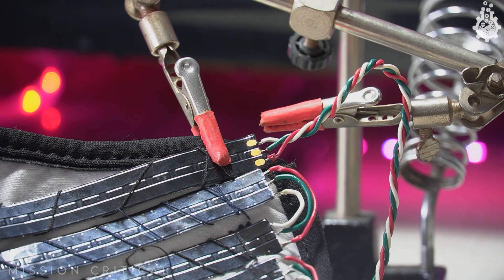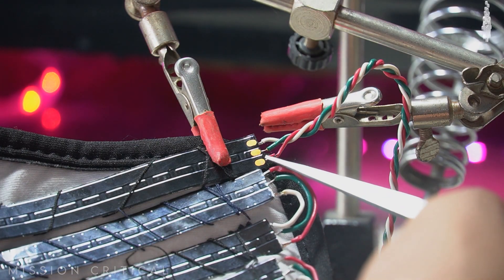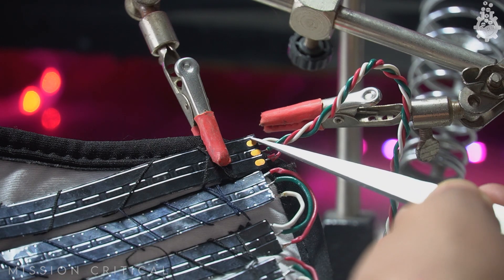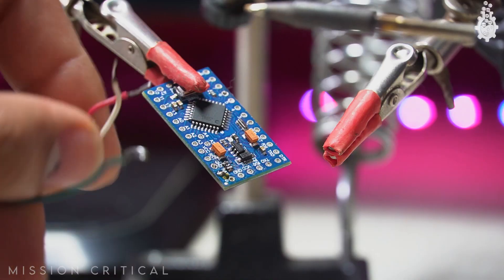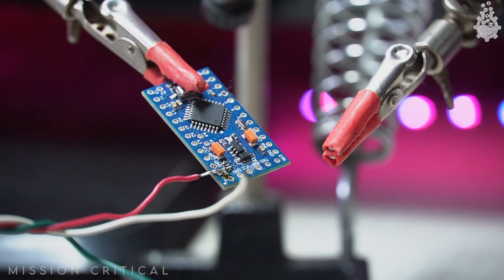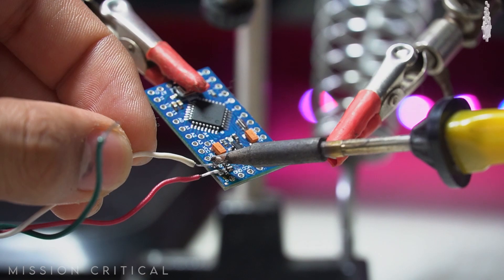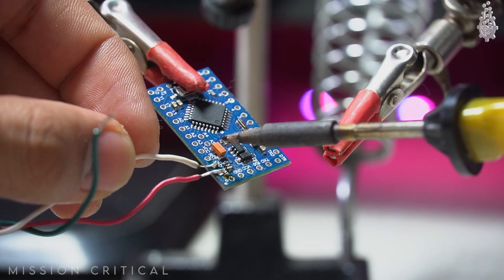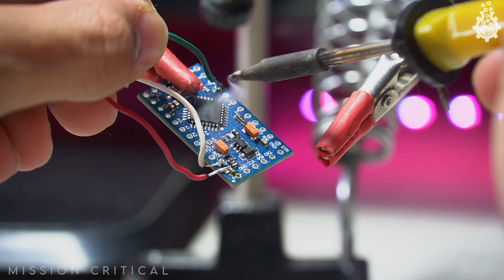Now we have 3 wires at the end of our strip which corresponds to VCC, DATA and GND. We will connect the VCC to Arduino's RAW pin, GND to GND of Arduino, DATA pin to D6 of Arduino.